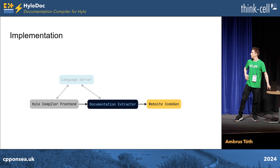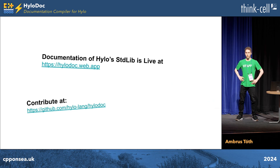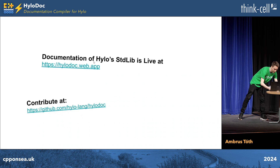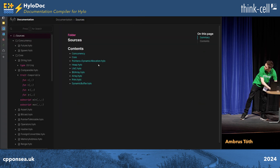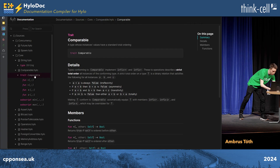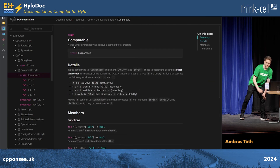Finally, there's website generation, which is just creating HTML files. The standard library of Hilo is available at hilodoc.web.app, so you can take a look. You can see all the members, click on types, and everything is linked together. Thanks a lot for your attention.